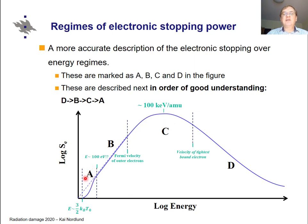Regime A is the lowest energy limit and in a way the least well understood. As of 2020, there is intense work going on in several groups trying to really understand what happens in the low energy limit.